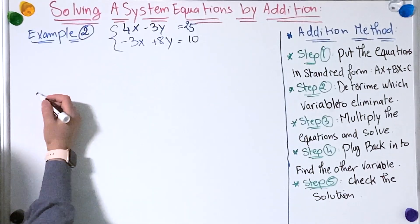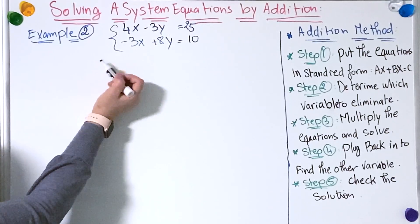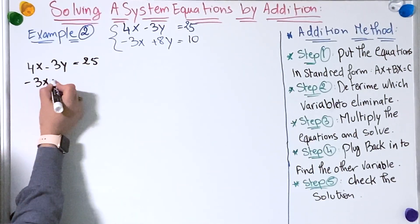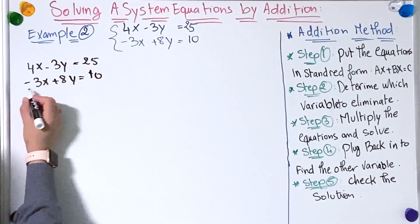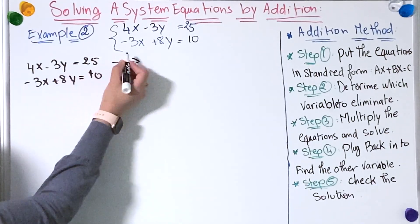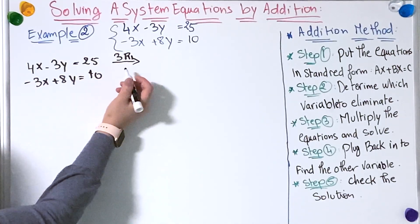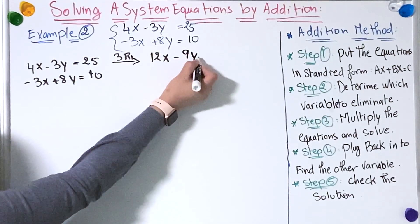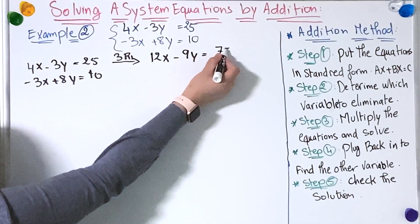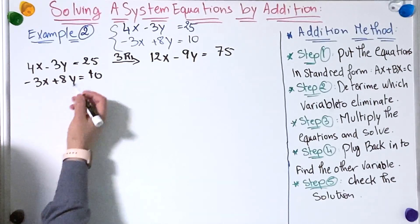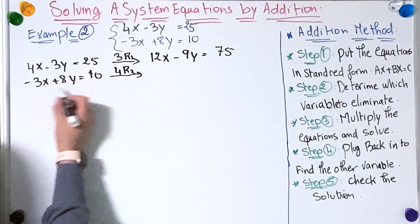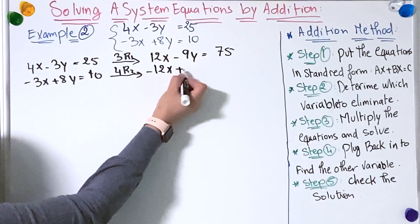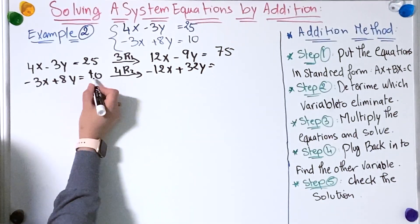Now I'm going to choose which variable to eliminate — I'll eliminate x. Before eliminating, I'm going to multiply the first row by 3 and the second row by 4. So for the first equation: 4x times 3 equals 12x, minus 3y times 3 equals minus 9y, and 25 times 3 equals 75. For the second equation: minus 3x times 4 equals minus 12x, 8y times 4 equals 32y, and 10 times 4 equals 40.